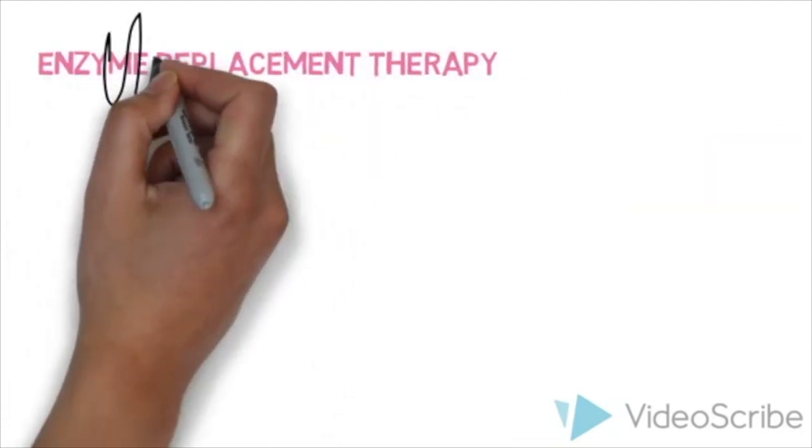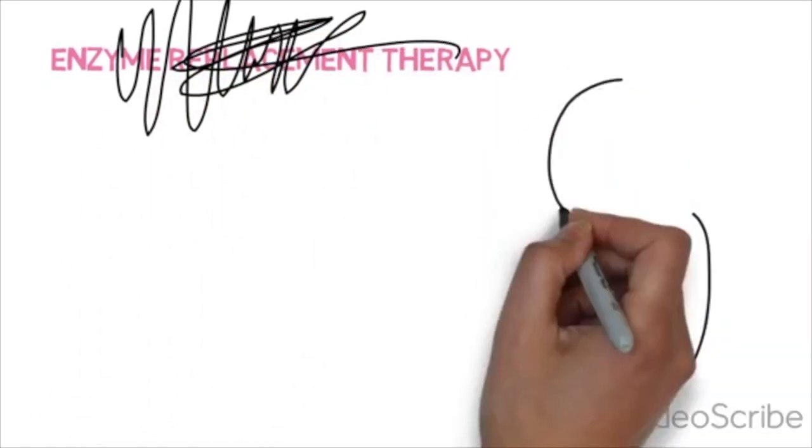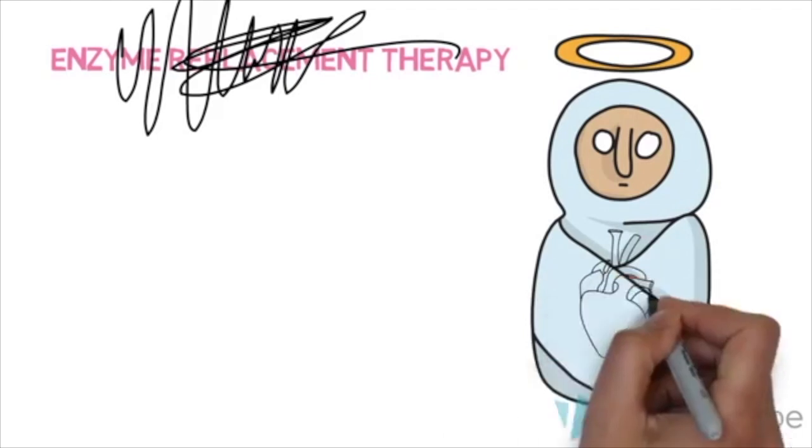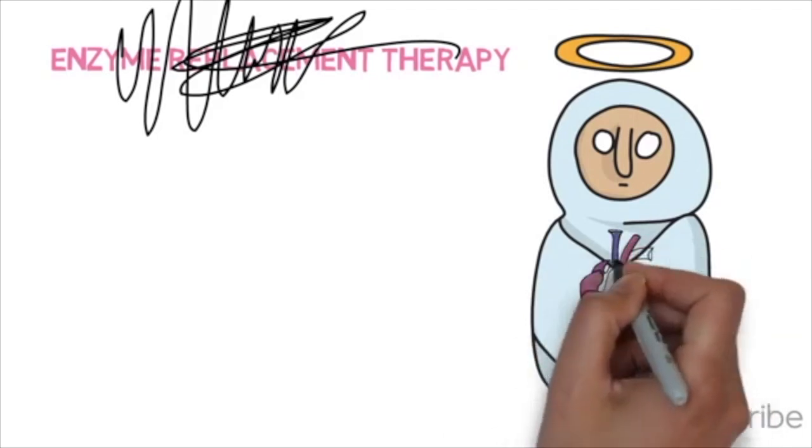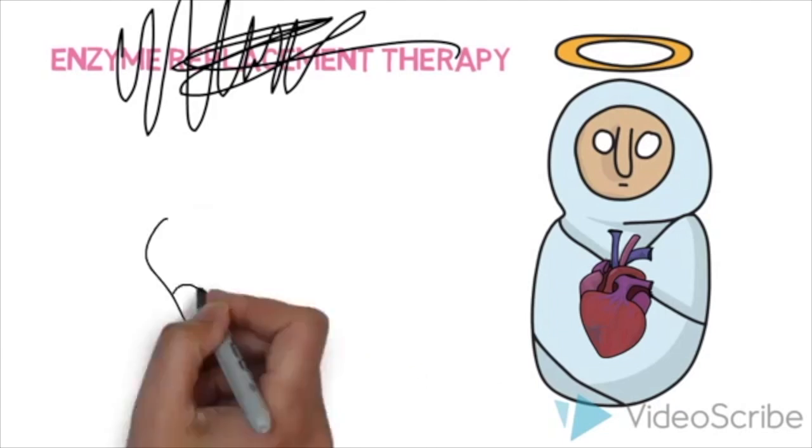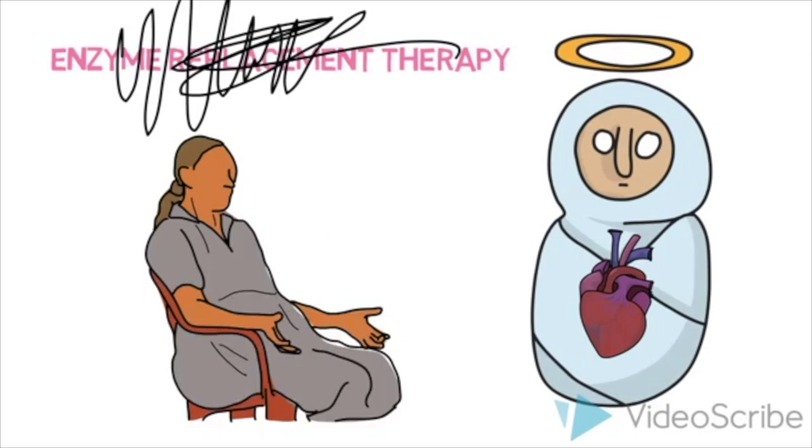Without enzyme replacement therapy, the hearts of babies with infantile onset Pompe disease progressively thicken and enlarge. These babies die before the age of one year from either cardiorespiratory failure or respiratory infection. For individuals with late onset Pompe disease, the prognosis is dependent upon the age of onset.